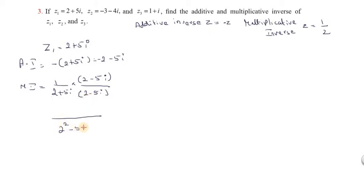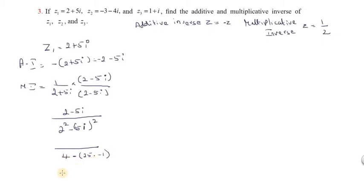So a squared minus b squared gives us 2 squared minus (5i) squared. 5i squared: 5 squared is 25, and i squared is minus 1, so 25 into minus 1 equals minus 25. The denominator becomes 4 plus 25, which equals 29. So the multiplicative inverse of Z1 is (2 minus 5i) divided by 29, that is, 1 by 29 into (2 minus 5i).